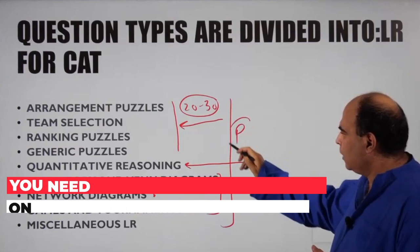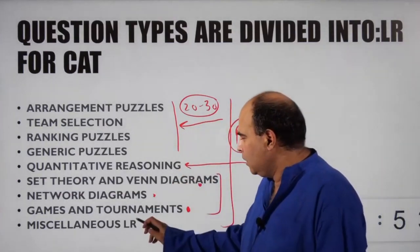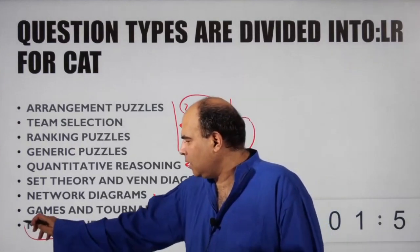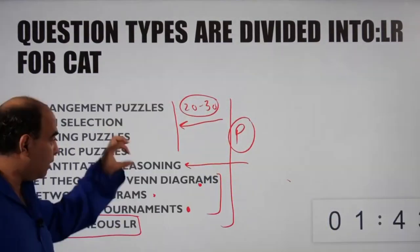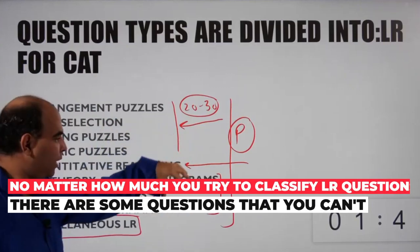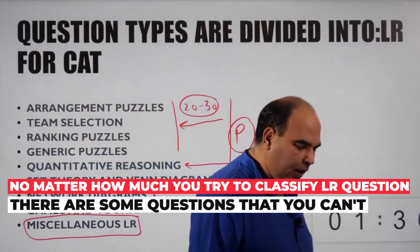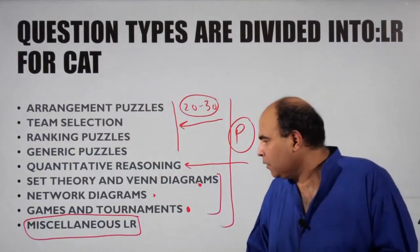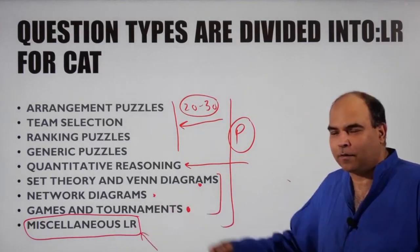Once the eight topics are done, there's this miscellaneous category—something you'll realize when you look at past year questions. No matter how much you try to put everything into boxes, there are still some questions completely different from the others. Those are the miscellaneous question types you prepare for, which you'll typically source from previous year questions.